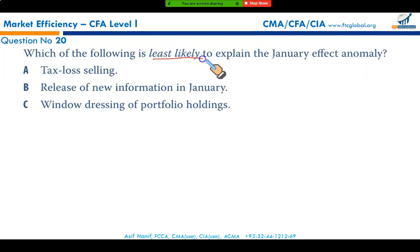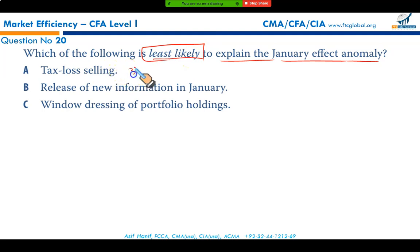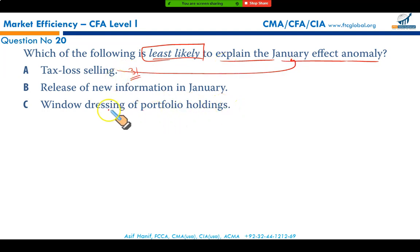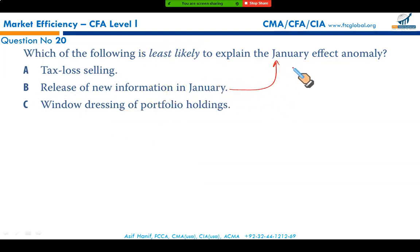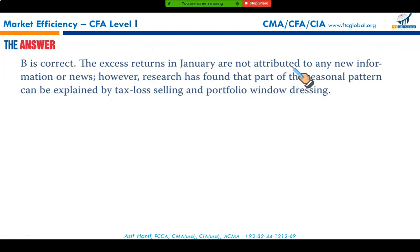Which of the following is least likely to explain the January effect anomaly? Tax-loss selling — selling loss-making investments at year-end for tax deductibility of losses — is one reason. Window dressing of portfolio holdings, which means deliberately removing risky assets at year-end to make the portfolio look good, is another reason. However, the release of new information in January is not a justification for the January effect, making option B the least likely explanation.